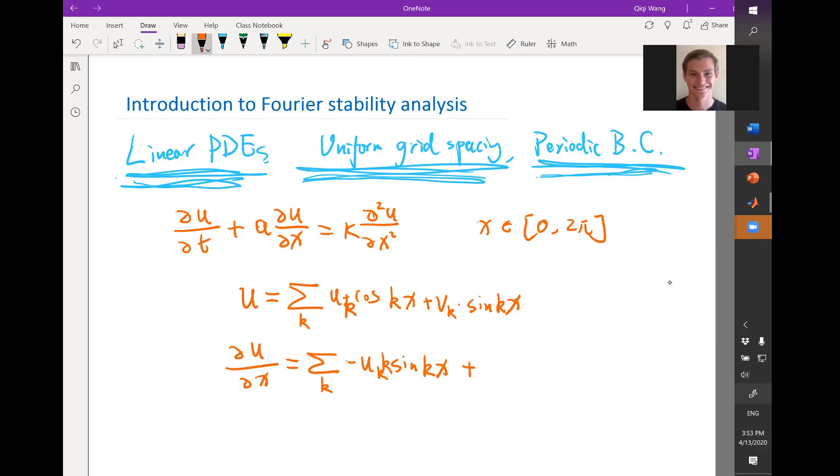And then if you take derivative to sine, you have still vk and another k comes out and the sine becomes cosine. So you still have a combination of sines and cosines of different multiples of x.